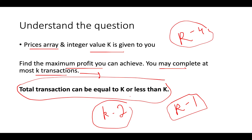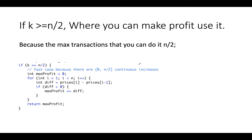There are two primary cases. I'll explain this by code rather than a test case. The first case is when k is greater than or equal to n/2. Why n/2? Because the maximum number of transactions you can make in an array of size n cannot be greater than n/2.